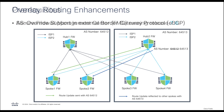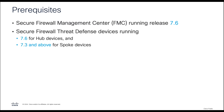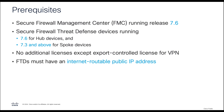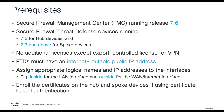To use this feature, the Firewall Management Center requires version 7.6, while the Firewall Threat Defense devices require 7.6 for hub devices and 7.3 and above for spoke devices. There are no additional licenses except the export control license for VPN tunnels, and FTDs must have an internet-routable public IP address. Ensure that you assign appropriate logical names and IP addresses to interfaces, and enroll certificates on the hub and spoke if planning to use certificate-based authentication.